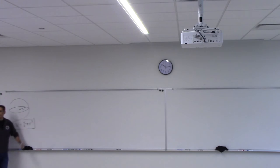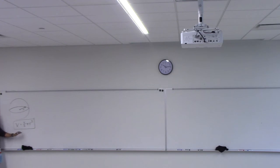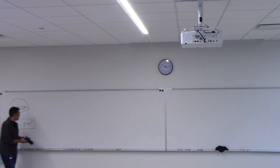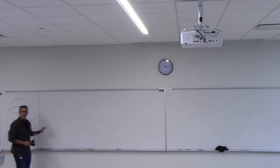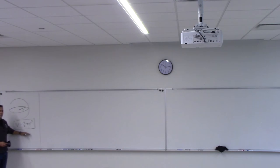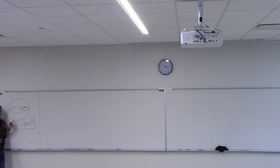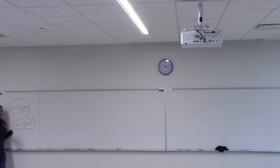So the volume should be 2π times the integral from zero to π of x times [sin(x) minus 0] dx, which is just 2π times the integral from zero to π of x·sin(x) dx. Could you integrate this? Integration by parts — so you could do that if you needed to.